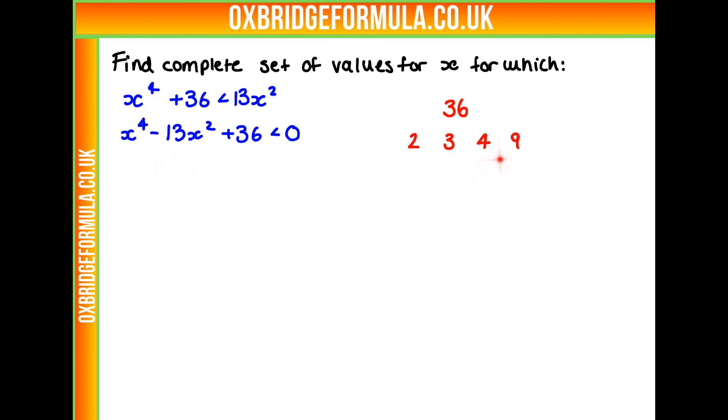Well, we know 4 times 9 makes 36 and they add together to make 13. So we're going to have the minus versions of these two. So we can write that out in our brackets: x squared minus 4 times x squared minus 9.